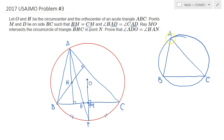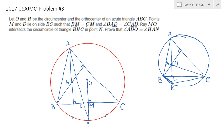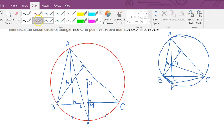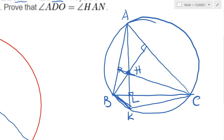Consider triangle ABC and locate the orthocenter H, where the altitudes meet at a 90-degree angle. Let's call a point K here, and the feet of the altitudes as L1, L2, and L3. We'll connect BK and KC and do a bit of angle chasing.